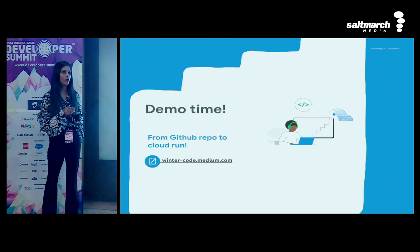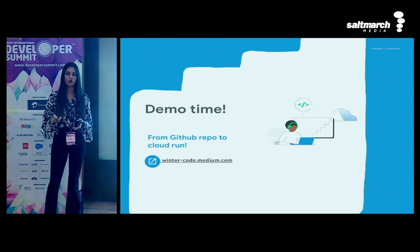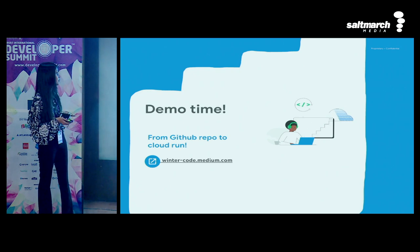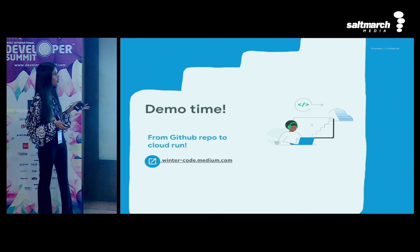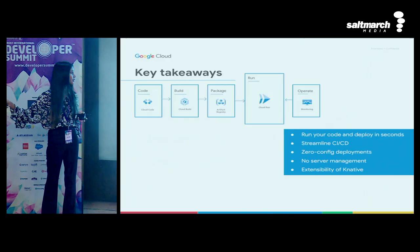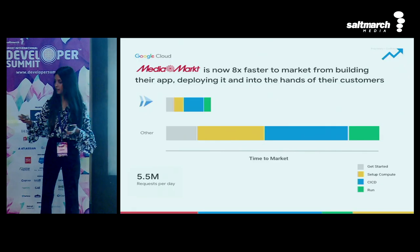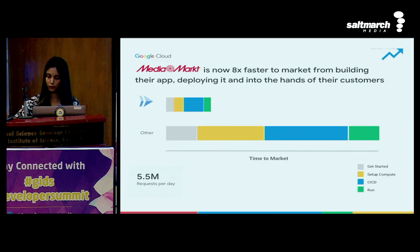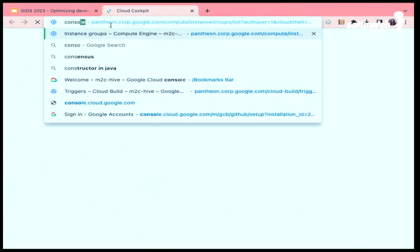I'm going to write a blog on this same demo so you can try it on your own as well. It will be out on my blog - you can follow me there to try it yourself. Now I'm going to the cloud console. This is Google Cloud's home page, and because we are deploying on Cloud Run, I'm going to search for Cloud Run.